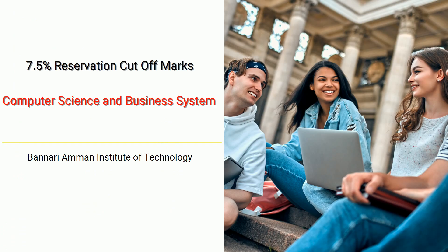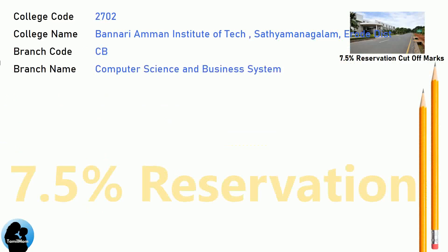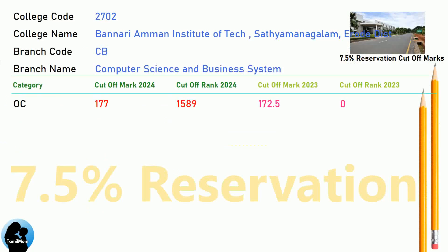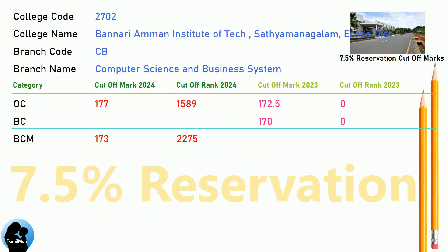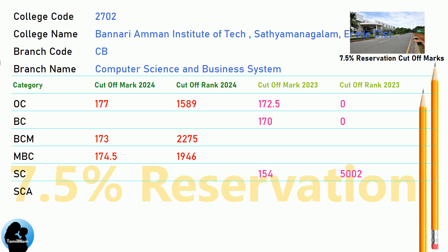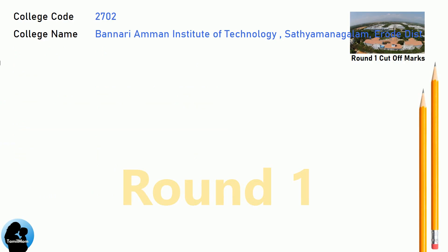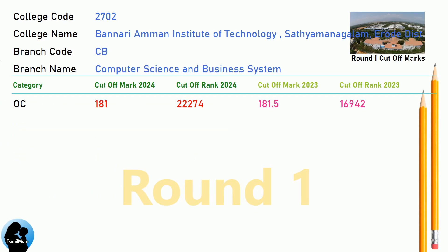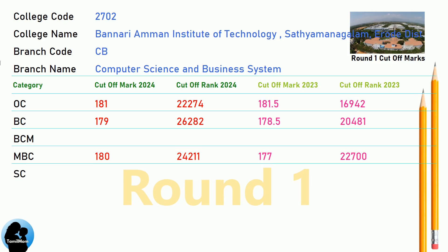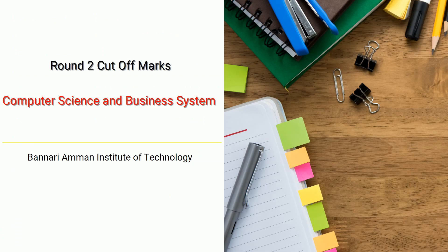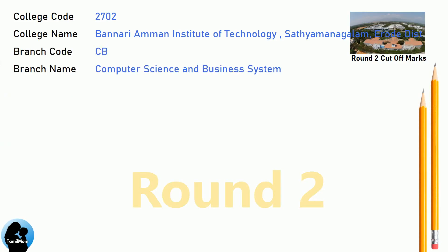DNA 7.5 Reservation Cut-Off for Banari Amman Institute of Technology in Computer Science and Business System. DNA Round 1 Cut-Off and Round 2 Cut-Off for Banari Amman Institute of Technology in Computer Science and Business System.